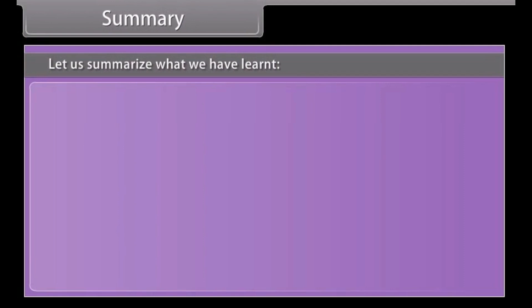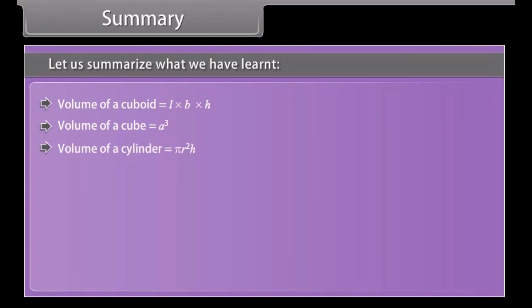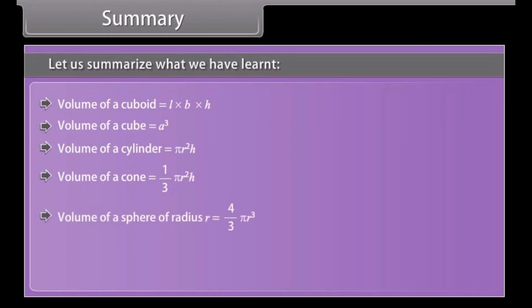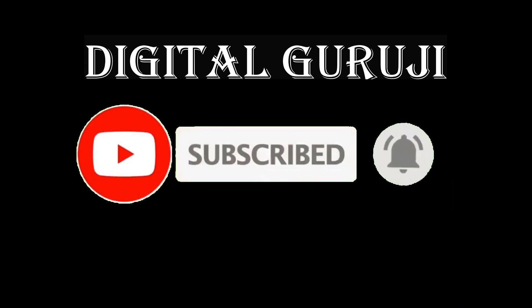Let us summarize what we have learnt. Volume of a cuboid = L × B × H. Volume of a cube = A³. Volume of a cylinder = π × R² × H. Volume of a cone = (1/3) × π × R² × H. Volume of a sphere of radius R = (4/3) × π × R³. Volume of a hemisphere = (1/2) × (4/3) × π × R³ = (2/3) × π × R³.